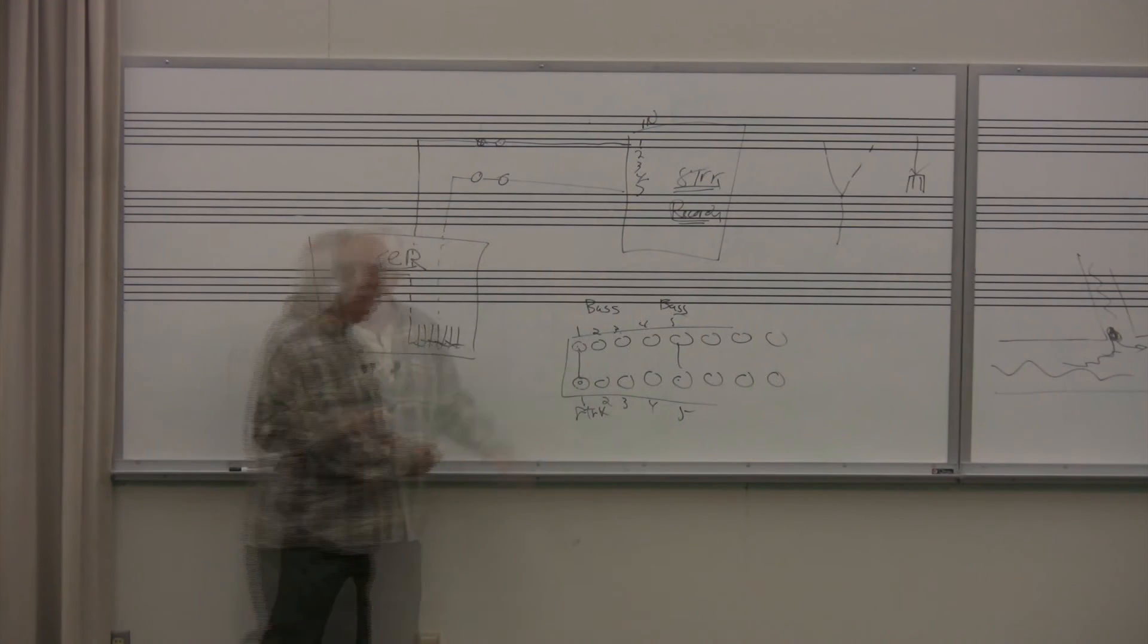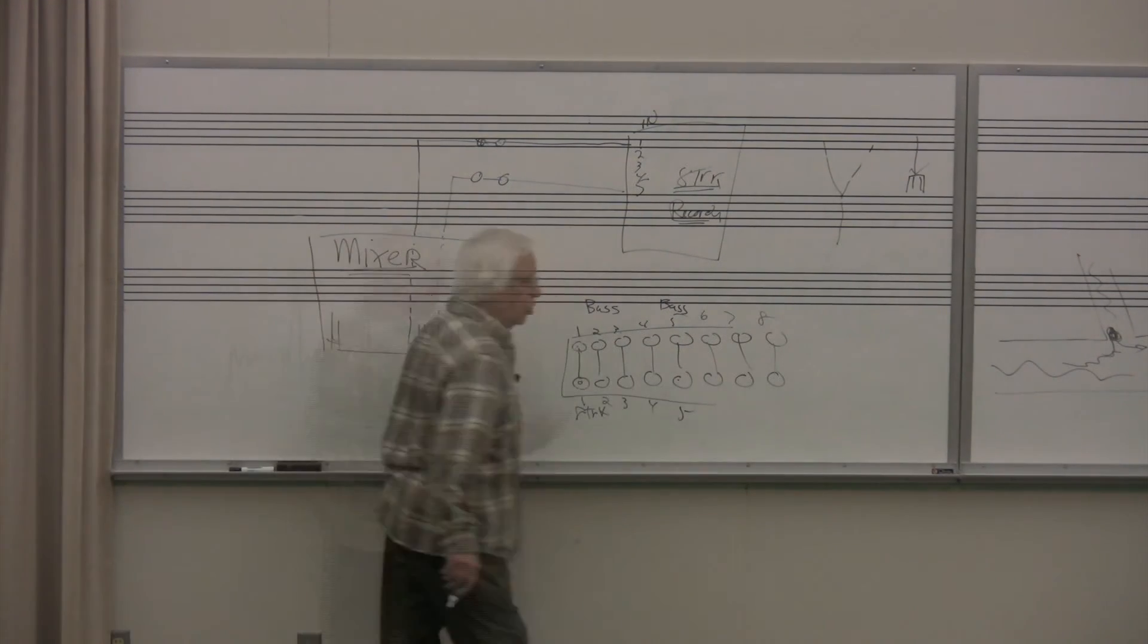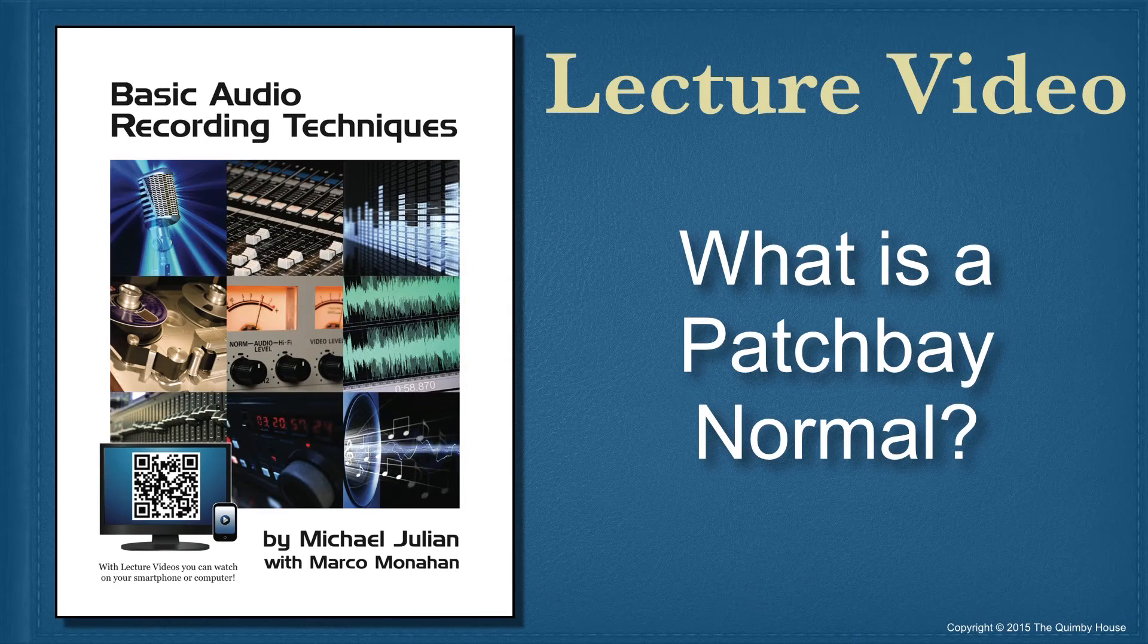You can see that I want my eight bus outputs to be normaled through the patch bay to my multi-track machine. All of them will be normal, so that all of the buses go to all of the inputs on your multi-track.